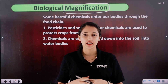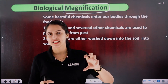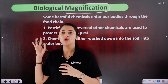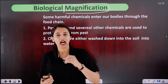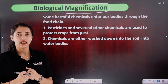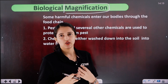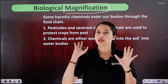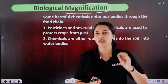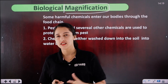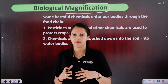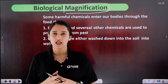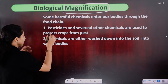Biological Magnification refers to the increase in the amount of a substance within a biological system. If any substance is biodegradable, it does not accumulate. But some chemical compounds which are non-biodegradable — such as pesticides — do accumulate.